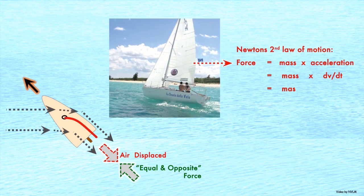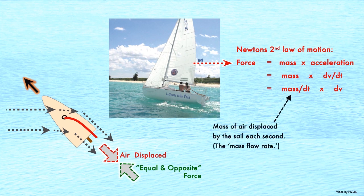According to Newton's second law of motion, the force generated equals the mass of air displaced by the sail each second times the velocity of the wind.